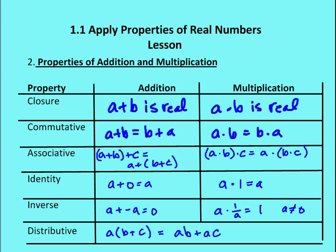So for real numbers, the closure property of addition just says that if you have a real number a and a real number b and you add them together, your result is going to be a real number. The same for the closure property of multiplication. If you have a real number a times a real number b, then your result is going to be a real number.